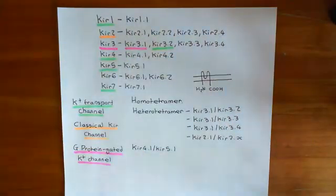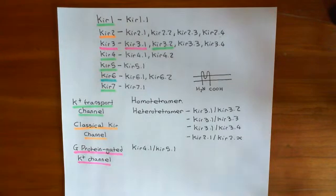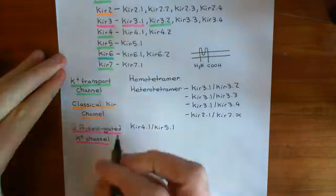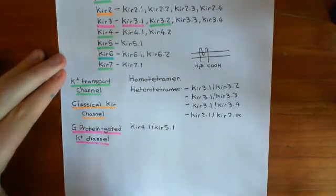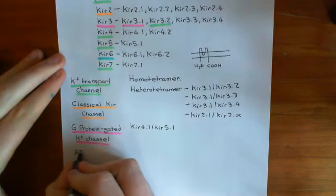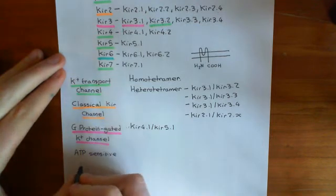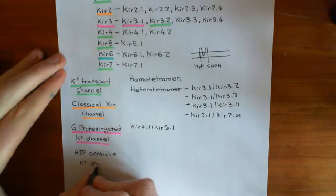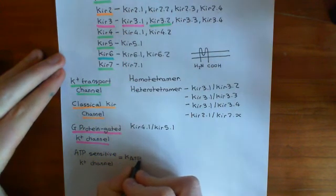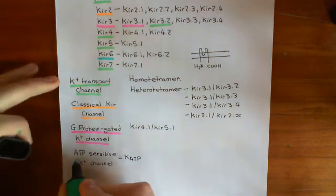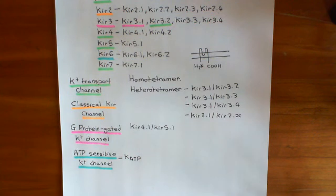Finally, KIR6 is the star of the show — this is the reason we've discussed these inwardly rectifying potassium channels. If you make an inwardly rectifying potassium channel out of members of the KIR6 family, then it is known as an ATP-sensitive potassium channel. ATP-sensitive potassium channel is often abbreviated to K-ATP. It's these ATP-sensitive potassium channels that we will, from now on, be concerning our attention on.